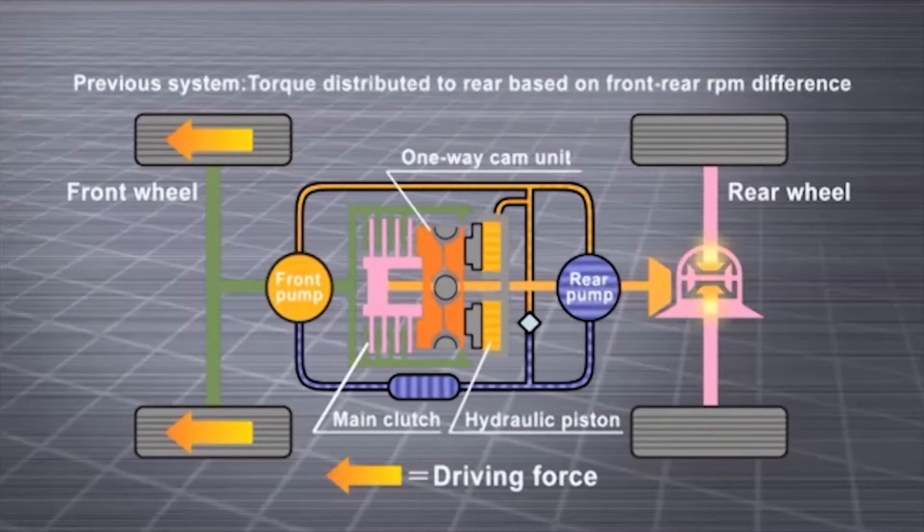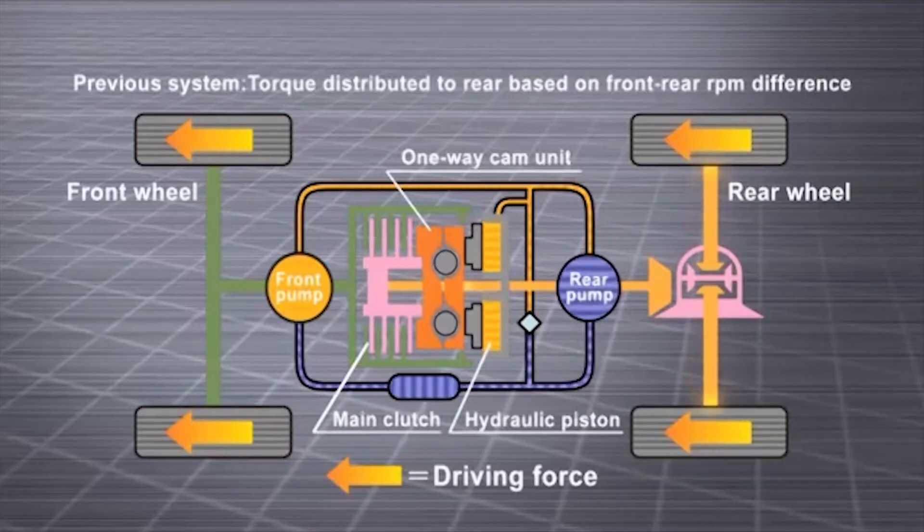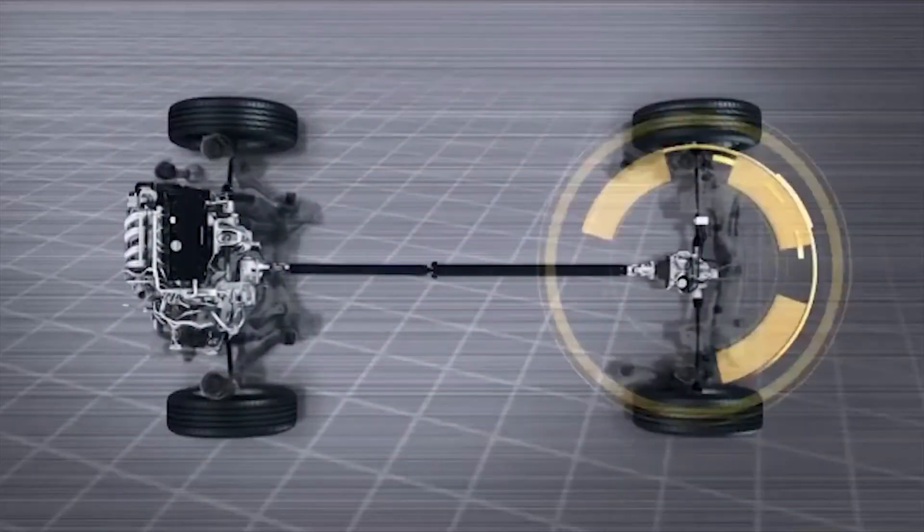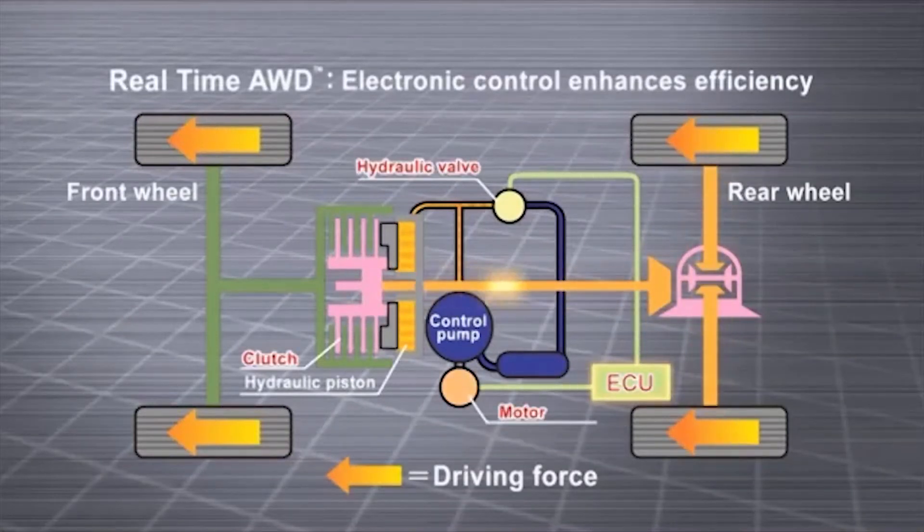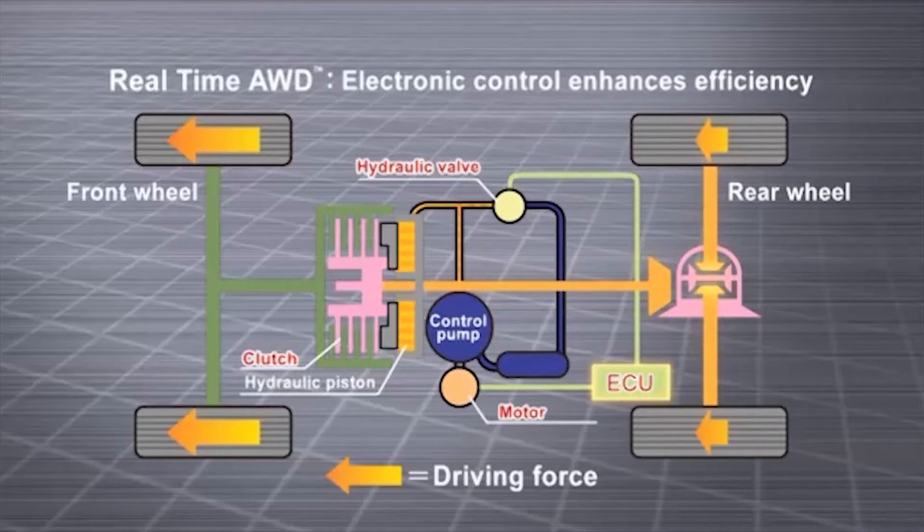In the new real-time AWD, the ECU controls a motor and a hydraulic control valve, making possible variable control of the clutch. Thanks to electronic control, the clutch distributes optimal torque to the front and rear wheels, resulting in greatly enhanced efficiency.